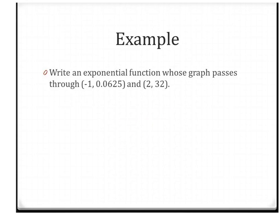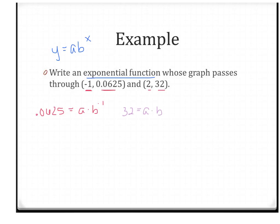Here's our first set of points: (-1, 0.0625) and (2, 32). We want to write an exponential function, so we're looking for a and b. From the first ordered pair: 0.0625 = a·b^(-1). The second equation gives us: 32 = a·b².